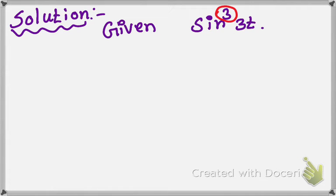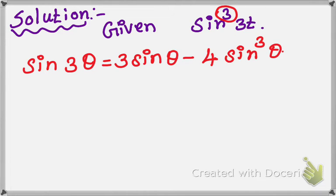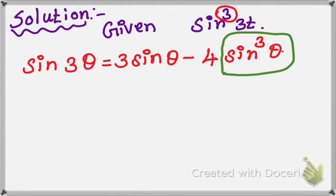We know the formula: sin 3θ = 3 sinθ − 4 sin³θ. We want sin³θ, so the remaining terms will go to the opposite side. So 4 sin³θ is on the left-hand side. Keep this formula.